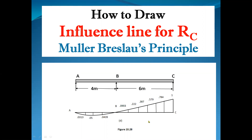We will consider beam ABC with AB equal to 4 meters and BC equal to 6 meters. Now let us see how to obtain the influence line diagram shape using Mueller-Breslau principle.